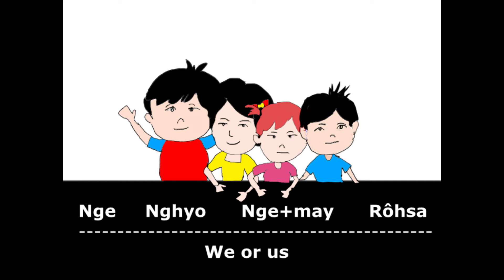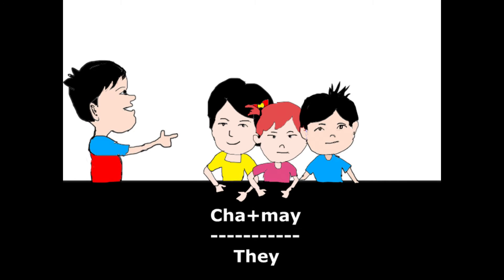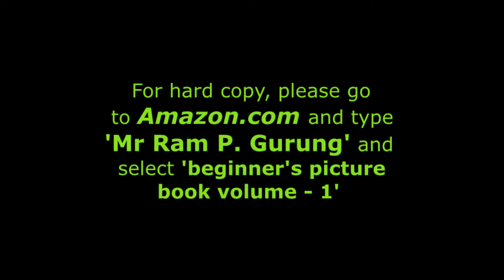Rosa. Chamae. For a hard copy, please go to Amazon.com and type Mr. Rampi Grung and select Beginner's Picture Book Volume 1.